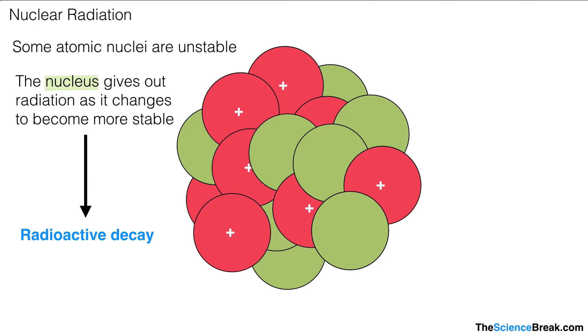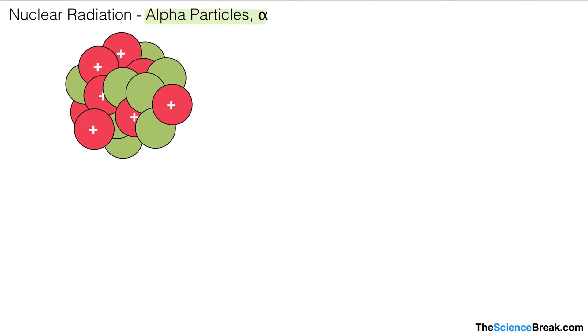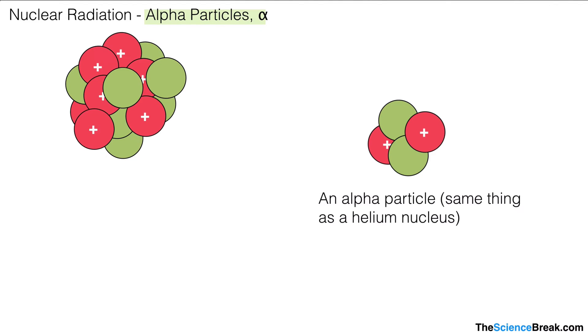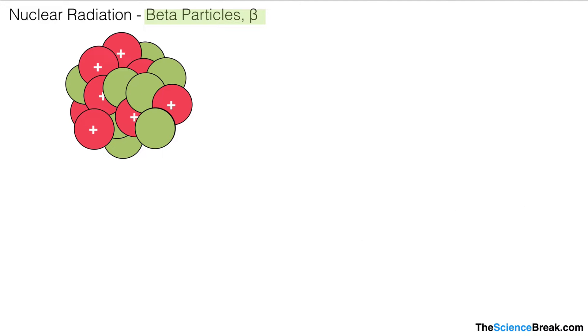Radioactive decay is when a nucleus gives out radiation as it changes to become more stable. There are three, no four, possible ways in which this can happen, and we're going to look at each one in turn. The first one is the alpha particle that can be given out from the nucleus. An alpha particle is the same thing as a helium nucleus, so in other words, it's got two protons and two neutrons. We don't show the electrons because it's just the nucleus we're talking about. As it's got two protons with a positive charge and two neutrons with no charge, it has an overall charge of plus two.